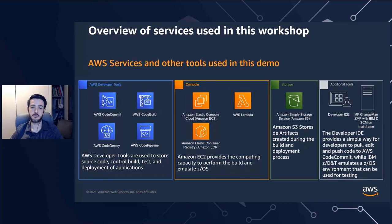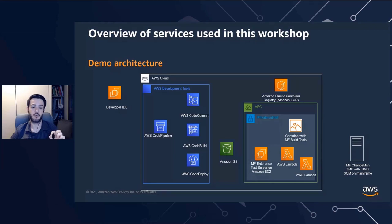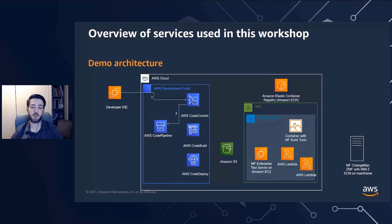Now let's look at the architecture used for this workshop, going all the way from the developer IDE to deploying to a mainframe environment. Our path starts when the developer IDE writes new code and pushes it to AWS CodeCommit, uploading it to the private Git repository. That triggers an AWS CloudWatch event which then calls AWS CodePipeline — the orchestrator responsible for all the services and steps in the CI/CD pipeline. It first calls AWS CodeBuild, which handles building the code that was just uploaded.